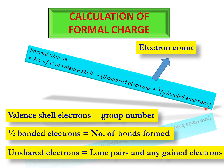Unshared electrons are those not shared with any other atom — this includes lone pairs on an atom, plus any electrons gained through a chemical reaction. If a particular ionic species is obtained as a result of a chemical reaction, that species may have gained or lost some electrons. So unshared electrons equal lone pairs plus any gained electrons during a particular process.